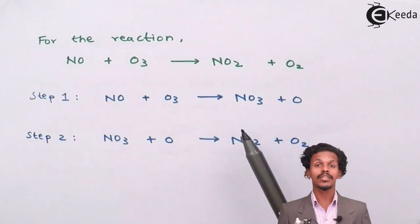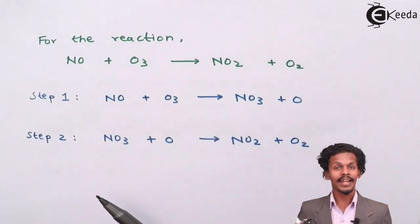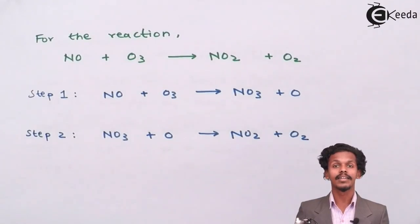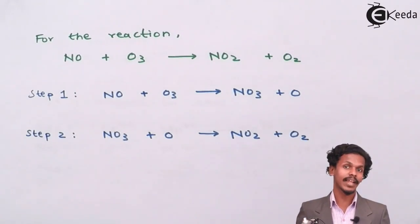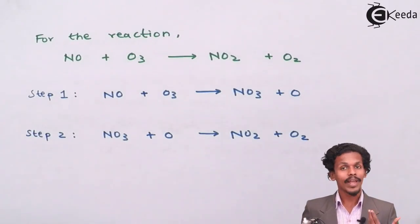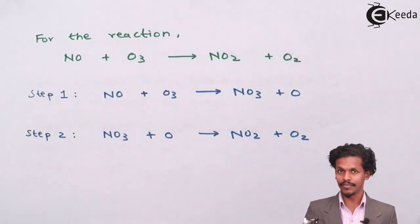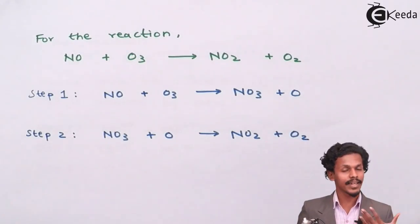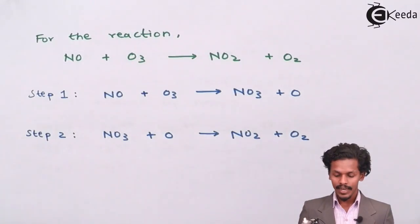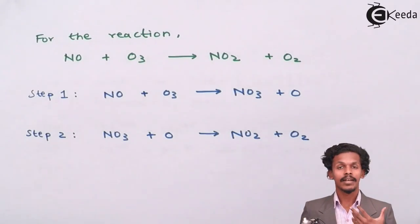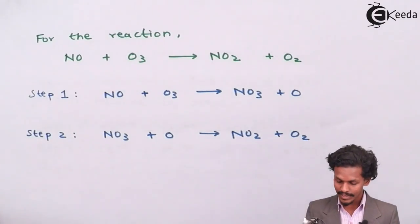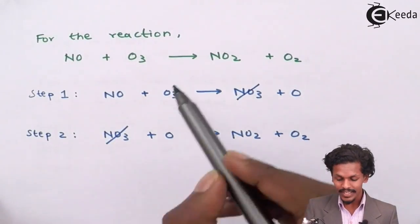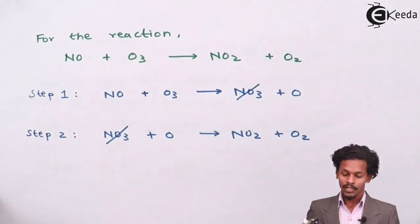This species is used and cannot be regenerated. Catalysts are also reused, but catalysts are regenerated after completion of the reaction, whereas reaction intermediates are consumed in the reaction itself. Therefore, NO3 is the reaction intermediate in this overall reaction, and it has no influence on the overall reaction equation — NO3 does not appear in the overall reaction.